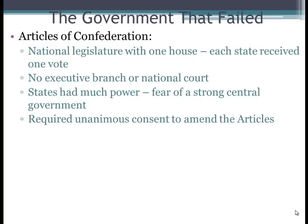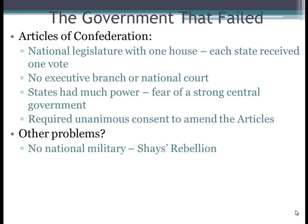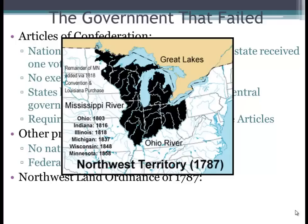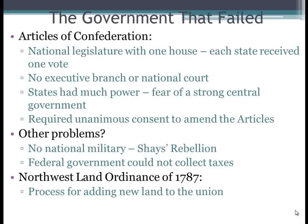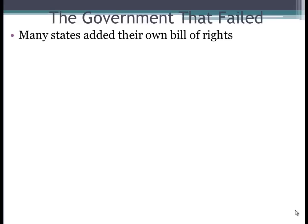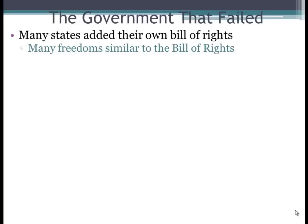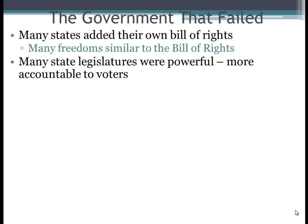Other problems under the Articles: there was no national military — demonstrated by Shays' Rebellion — and the federal government could not collect taxes; it could only ask states to contribute. One positive was the Northwest Land Ordinance of 1787, which created a process for adding new land to the Union. Once a territory reached 60,000 people it could apply to become a state, and it also barred slavery in the Northwest Territory. Many states added their own Bills of Rights, and state legislatures were powerful and more accountable to voters.